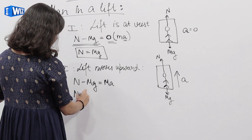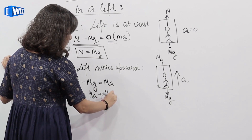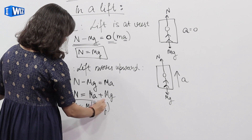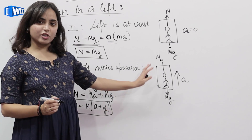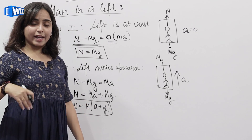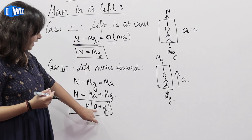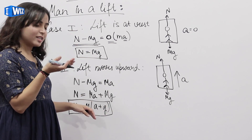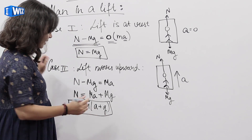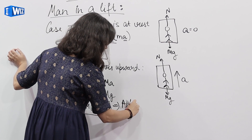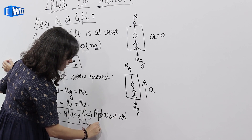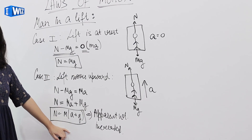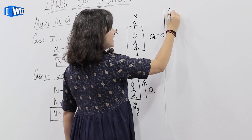So from here N is equals to MA plus MG — normal reaction is equals to M(A + G). That means जब lift उपर जा रही है तो जो man है उसको अपना weight heavy feel होगा. Weight is increased — पहले जब lift rest पर थी, weight था MG, लेकिन अब जैसे lift उपर की तरफ accelerate कर रही है weight increase हो गया M(A + G). That means apparent weight increases.